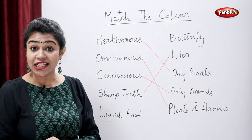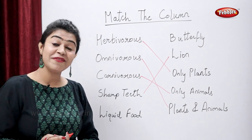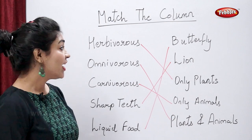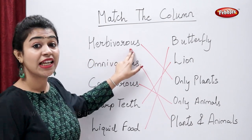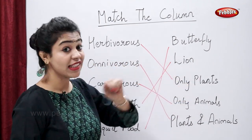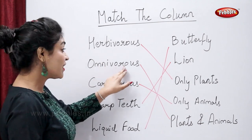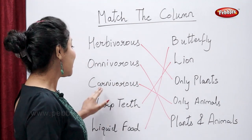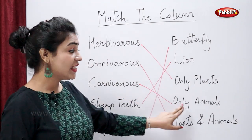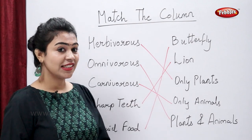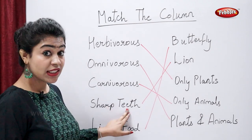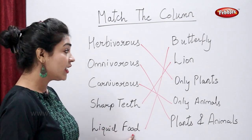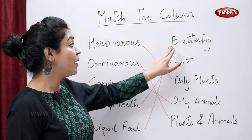Butterfly sucks liquid food from flowers. So students: herbivorous animals eat only plants, omnivorous animals eat plants and animals both, carnivorous animals eat only animals, sharp teeth — lion has sharp teeth, and liquid food is had by butterfly.